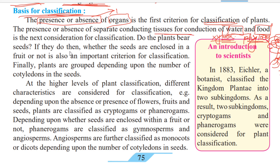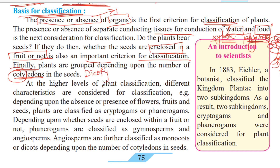The third criterion is whether seeds are enclosed in the fruit or not — seeds can be open or covered. Finally, plants are grouped depending upon the number of cotyledons in the seed. Seeds can be divided into two parts called cotyledons, and seeds with one cotyledon are called monocotyledons, giving us the monocot and dicot classification.